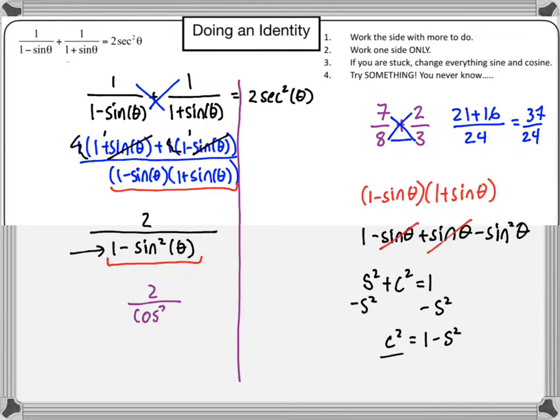And then finally, I know that if cosine is in the denominator there, that I can use the reciprocal identity, because 1 over cosine, if you remember,